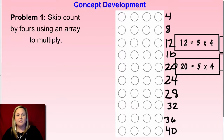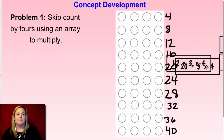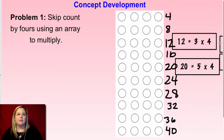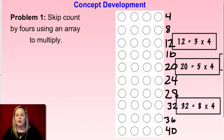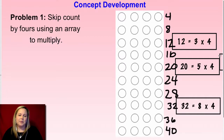Your next one is 32 — find the product of 32 and write the multiplication expression that matches. If you need time, click pause. I came up with 32 equals 8 times 4. Also notice how because of the commutative property of multiplication you can flip that, so you could also have 32 equals 4 times 8.